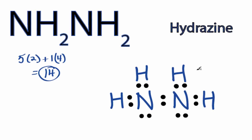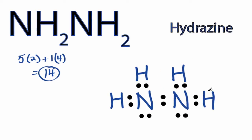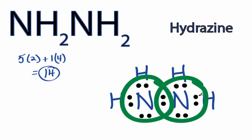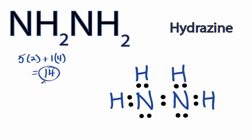Hydrogen only needs 2 valence electrons to have a full outer shell. Nitrogen needs 8 valence electrons. This Nitrogen has 8, and this Nitrogen here also has 8. So the octets are satisfied on the Nitrogen atoms. We're still only using the 14 valence electrons that we had for the NH2NH2 Lewis structure, so we're done. We have full outer shells on each of the atoms. We've used all 14 valence electrons.